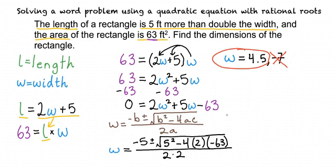Now we just need to find the length. Well, our other equation says that L is equal to 2W plus 5. Can we use that to find L? Yep. If we replace this W with 4.5, we see that the length equals 2 times 4.5 plus 5, which simplifies to 14.